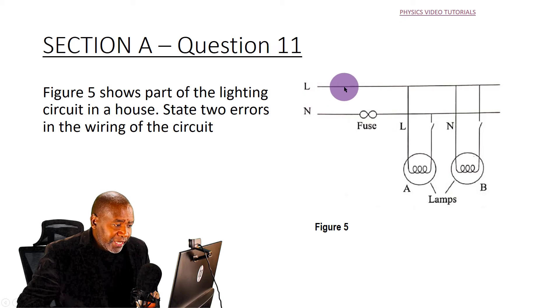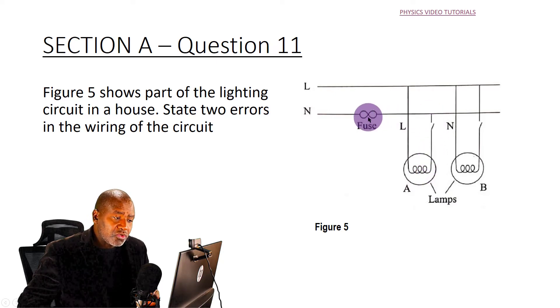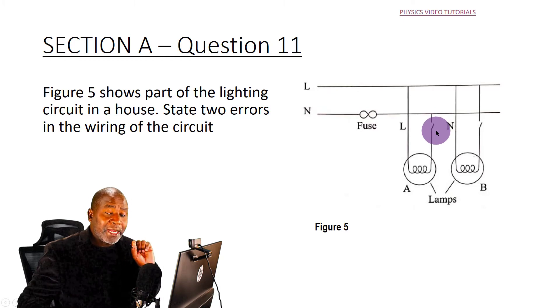When we follow the live wire, we get to the lamp, and then after the wire comes from the lamp as it goes to the neutral, we have the switch connected. So we can directly see that for lamp A, the switch is not connected correctly. It's connected to the neutral instead of the live wire.